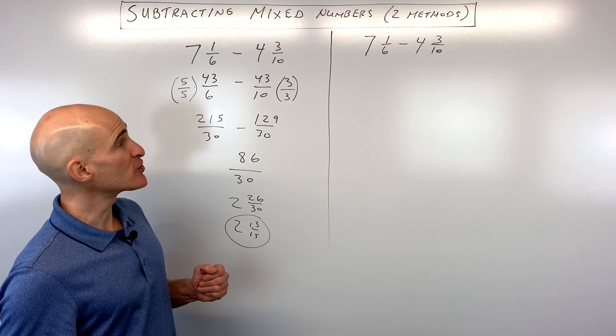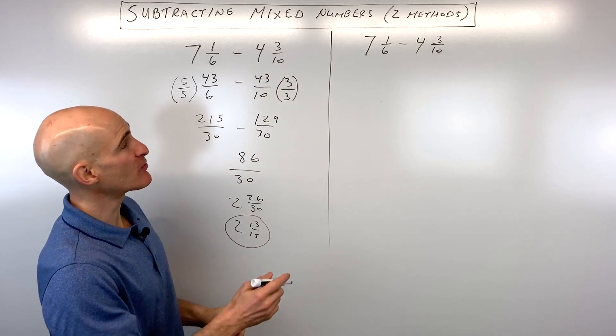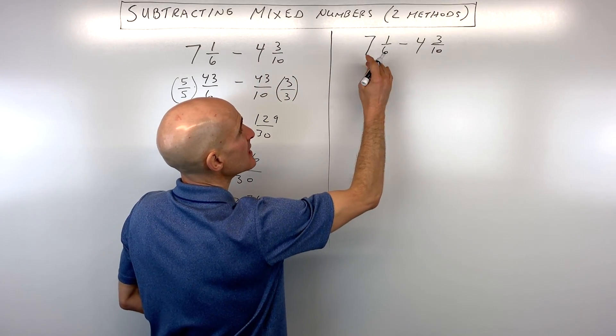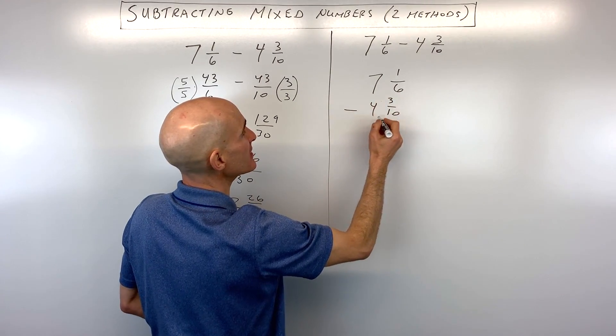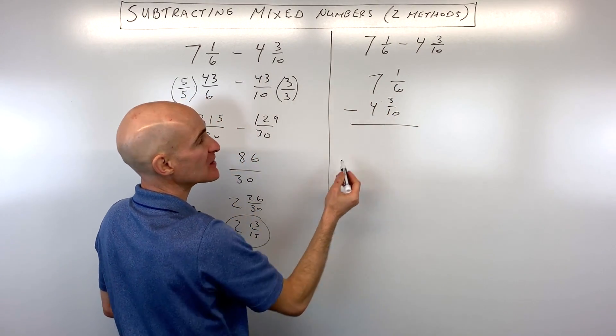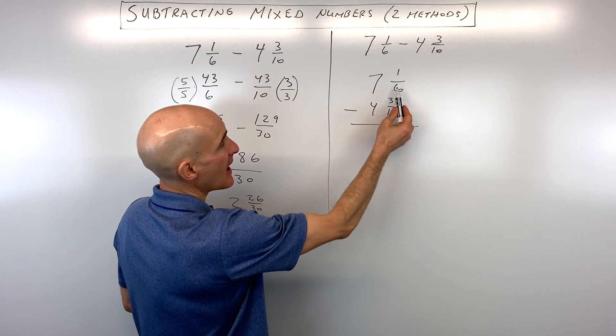Let's look at this from another perspective now. Instead of turning these into improper fractions, let's set this problem up slightly differently. Instead of looking at it horizontally, let's look at it in a vertical fashion like this. So 7 and 1 sixth minus 4 and 3 tenths. The first thing we have to do is we have to get a common denominator.